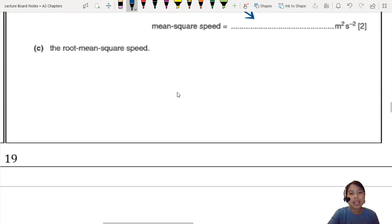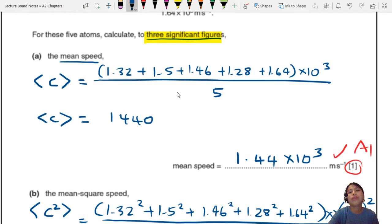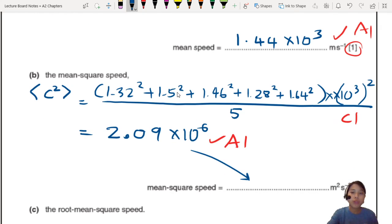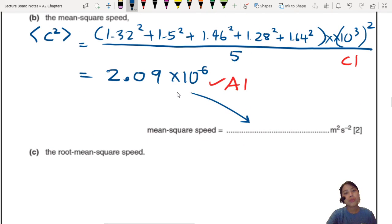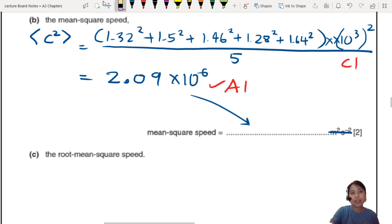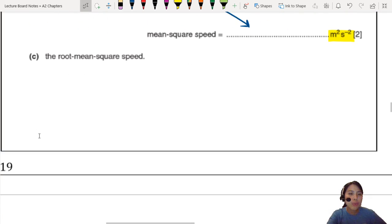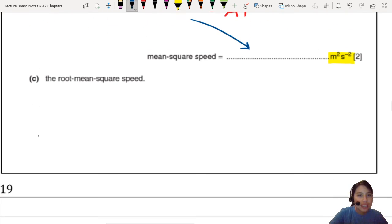Anyway, write the answer here. What's the last one? Root mean square speed. Oh, this question really tests do you know the difference between mean speed, mean square speed, and root mean square speed? So notice mean square speed, the units. The units is not your usual meter per second already. This unit is meter square per second square, whereas speed is just meter per second. So if you square root this thing, how would that look like?